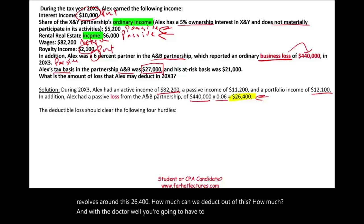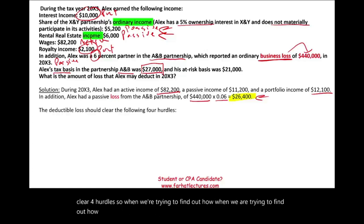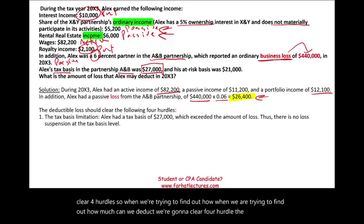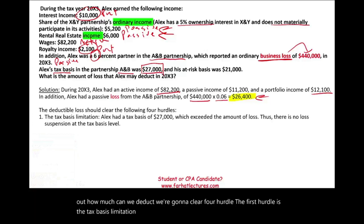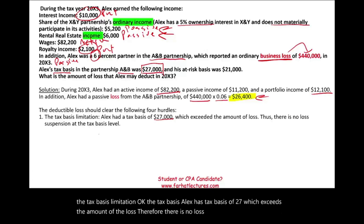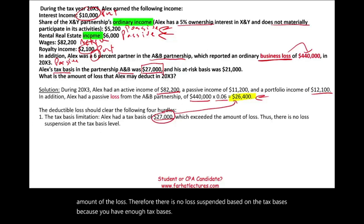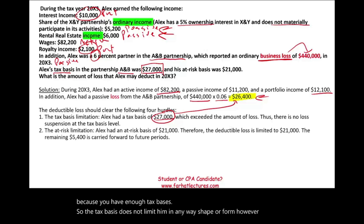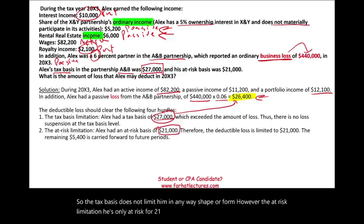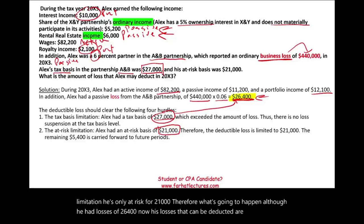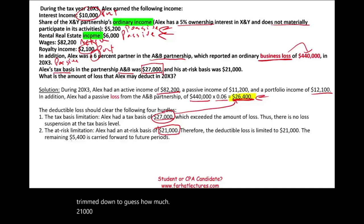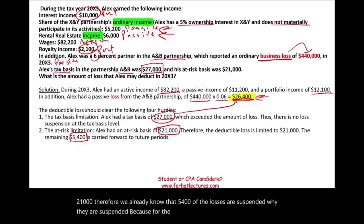We also have a passive loss of $440,000 times 6%, which is $26,400. The whole question revolves around this $26,400 — how much can we deduct? The deductible loss must clear four hurdles. The first hurdle is the tax basis limitation. Alex has a tax basis of $27,000, which exceeds the loss of $26,400, so there is no loss suspended based on tax basis. However, for the at-risk limitation, he's only at risk for $21,000. Therefore, although he had losses of $26,400, losses that can be deducted are trimmed down to $21,000, and $5,400 of losses are suspended under the at-risk rule.